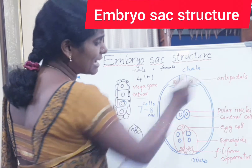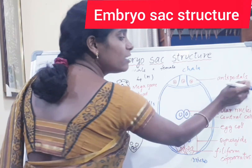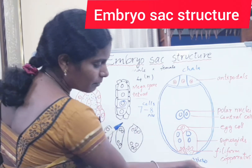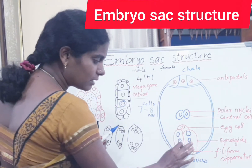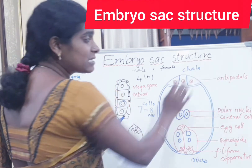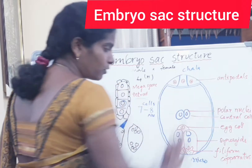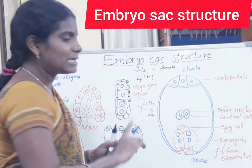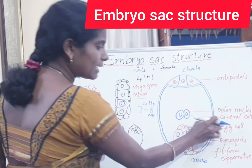Towards the chalazal region, there are 3 more cells called antipodals. So on the micropylar region side there are 3 cells: 2 synergids and 1 egg. On the chalazal region side there are 3 more cells: the antipodals. In the middle, there is a large central cell containing 2 polar nuclei.